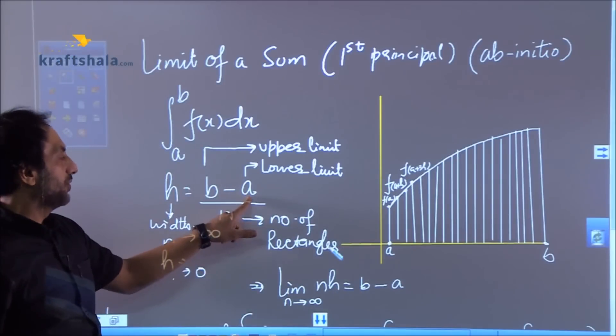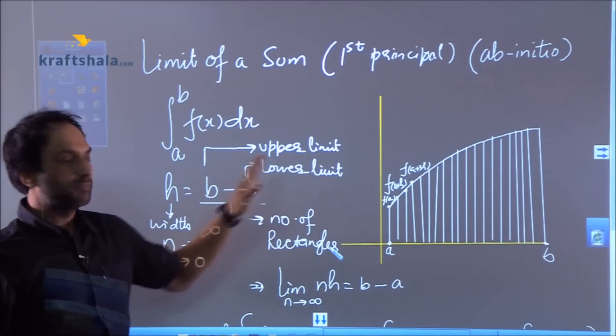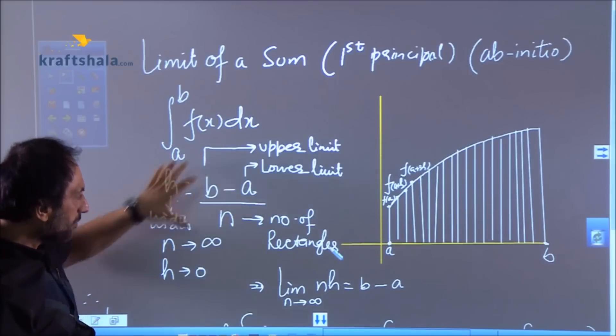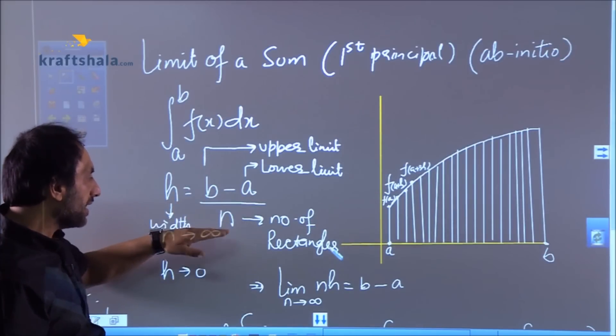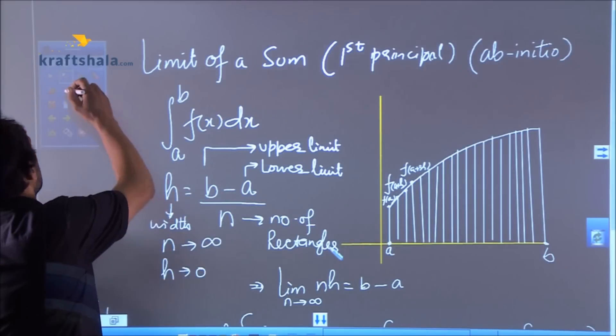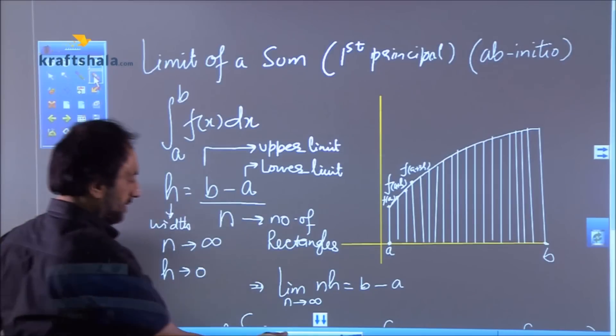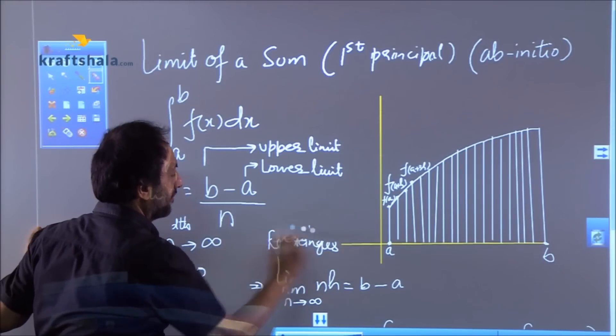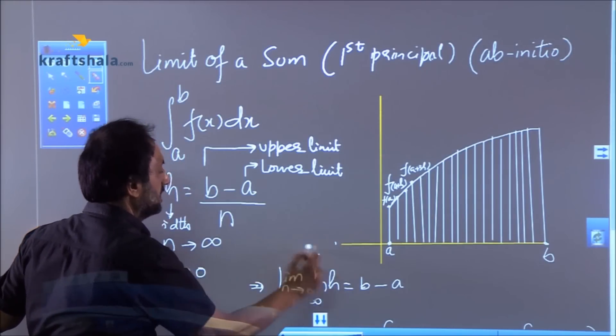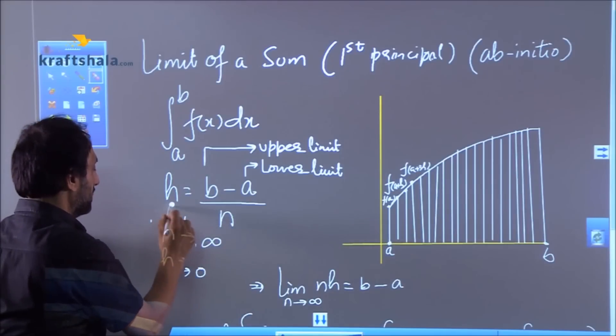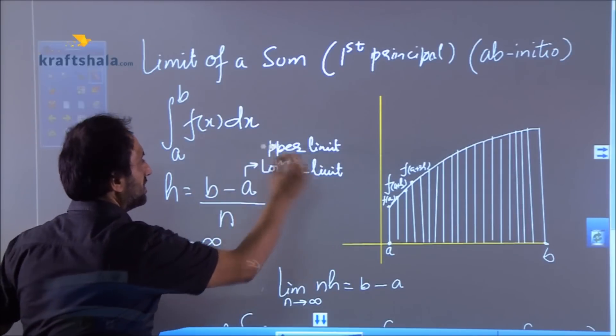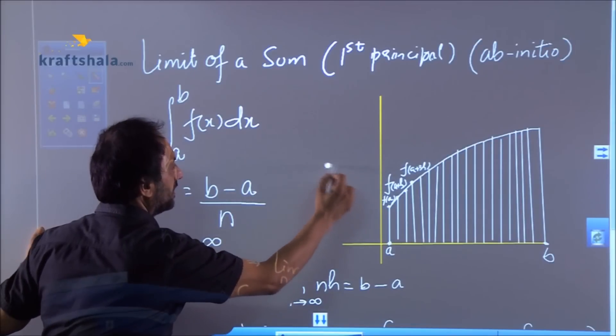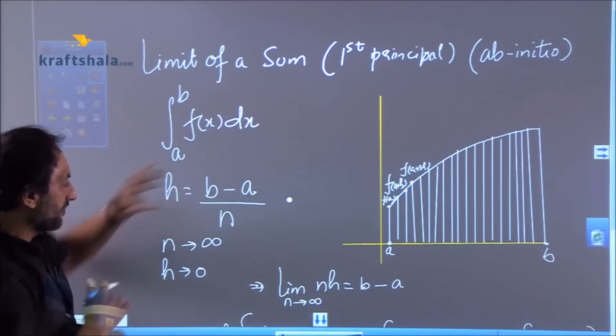You very well know that a is the lower limit and b is the upper limit. So this is the width given by the formula b minus a upon n. This will be clearer to you that n is the number of rectangles, h is the width, b is the upper limit, and a is the lower limit. So this formula is now very simple.